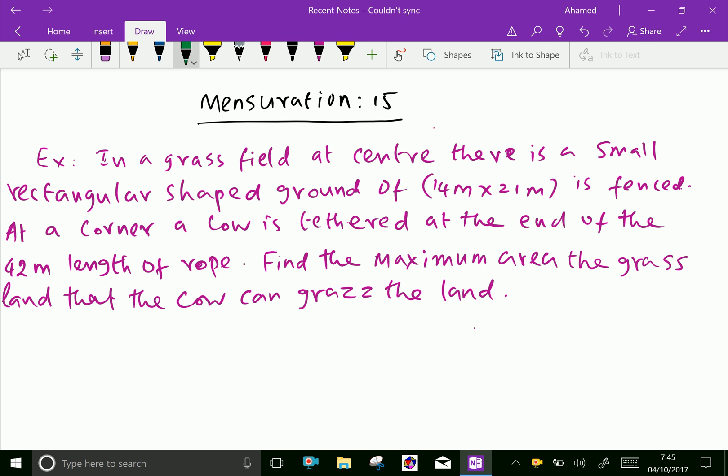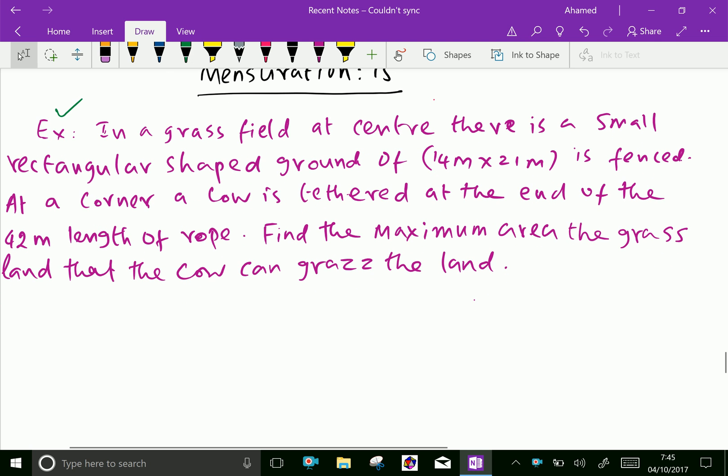Example: in a grass field at center, there is a small rectangular shaped ground of 14m and 21m is fenced. At a corner, a cow is tethered at the end of the 42m length of a rope. Find the maximum area the grass land that the cow can graze the land.